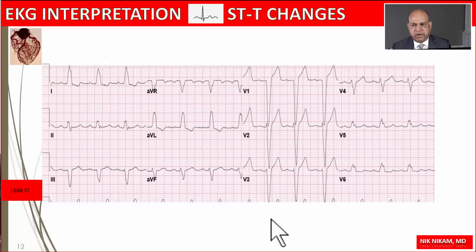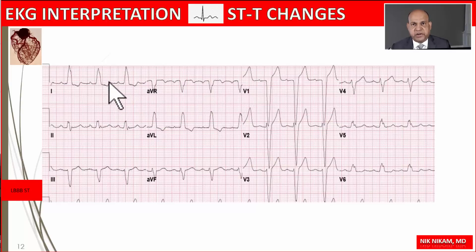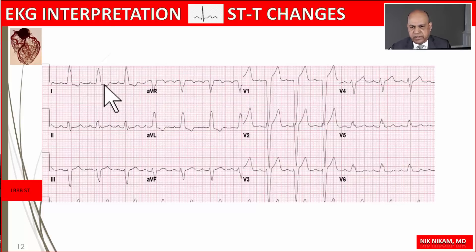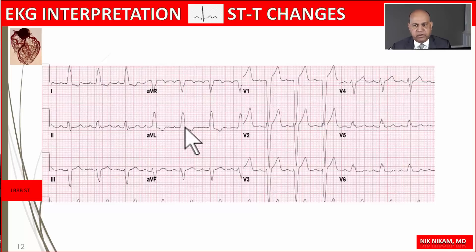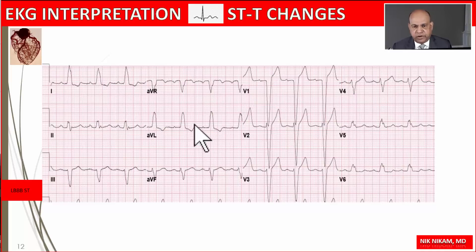Here is an example of a patient with left bundle branch block. Patients with left bundle branch block have discordant ST-T changes — the changes are in the opposite direction of the QRS complex. As we can see, there is a down-sloping ST segment with inverted T wave, or sometimes biphasic T waves. These are secondary changes related to the bundle branch block and do not necessarily represent myocardial ischemia.